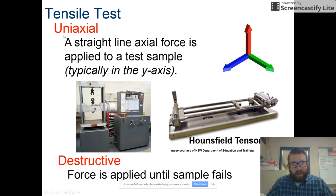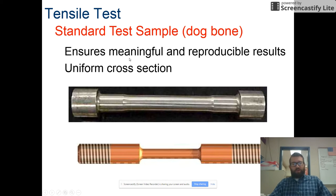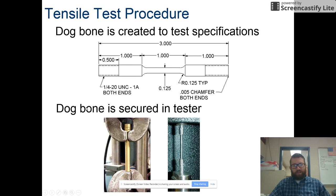We're going to focus mainly on the tensile test. Uniaxial means we look at what happens in a straight line when you try to pull apart a material. This is a destructive test — force is applied until the sample fails. We use a standard test sample commonly referred to as a dog bone, which ensures meaningful and reproducible results because all factors such as length and cross-sectional area are standardized. The dog bone is three inches long.